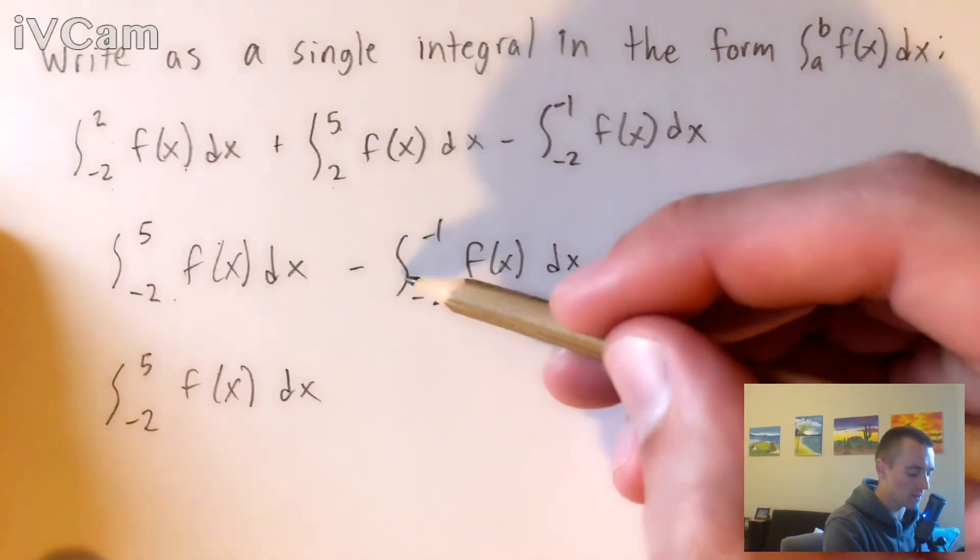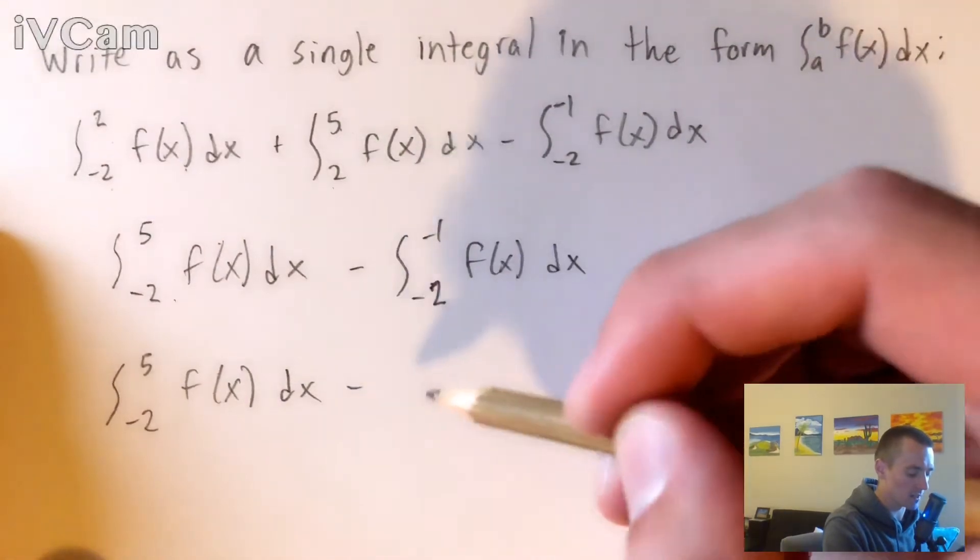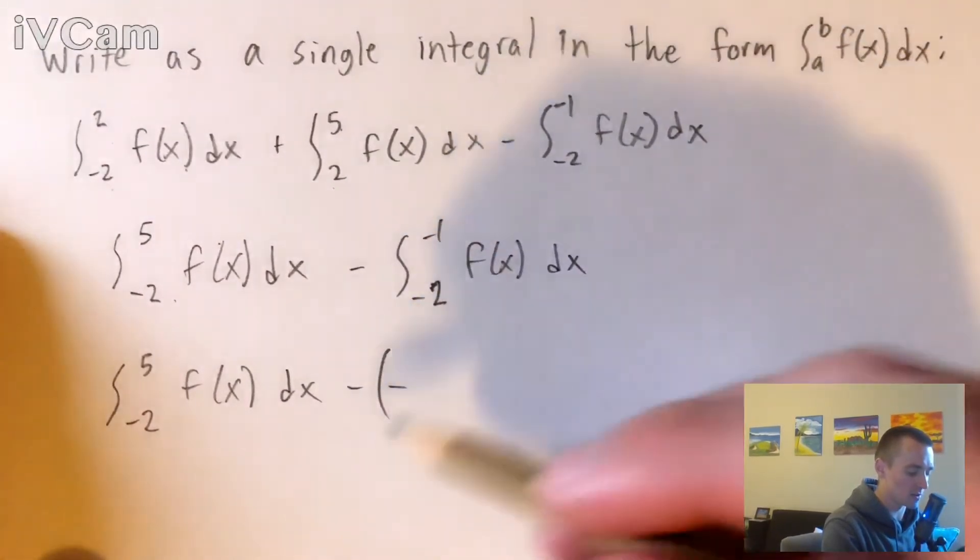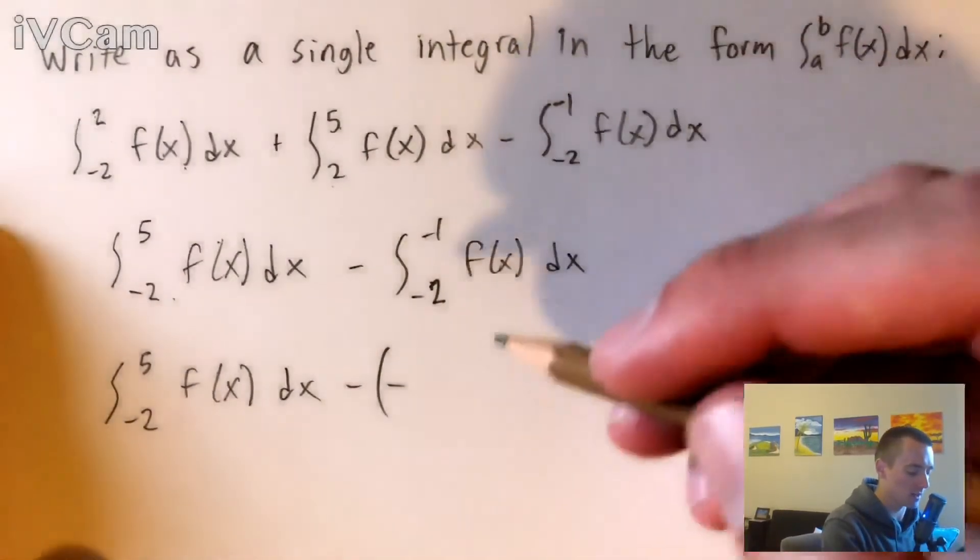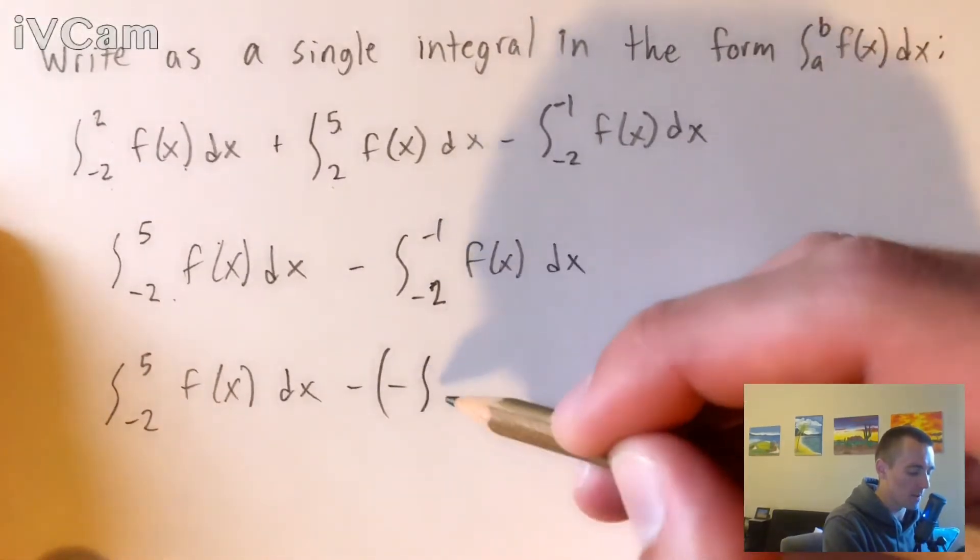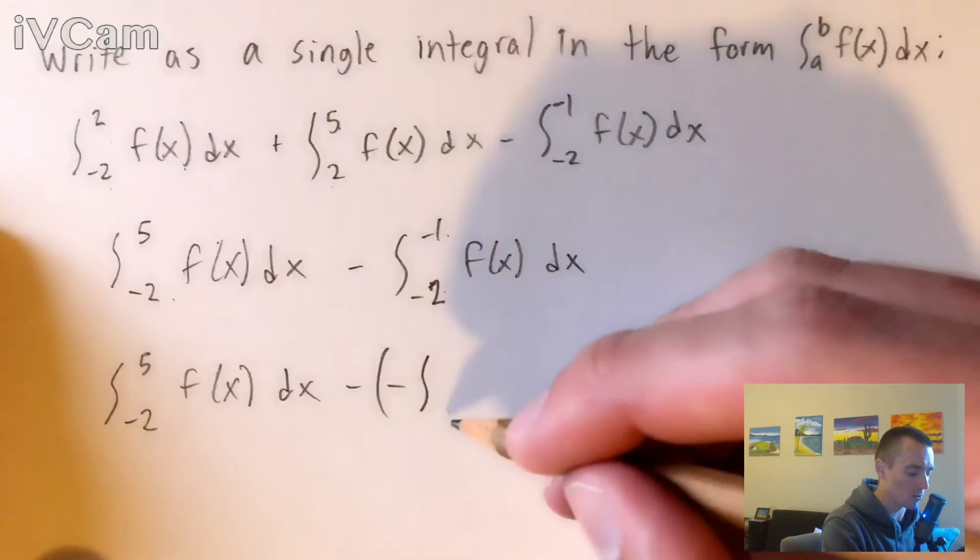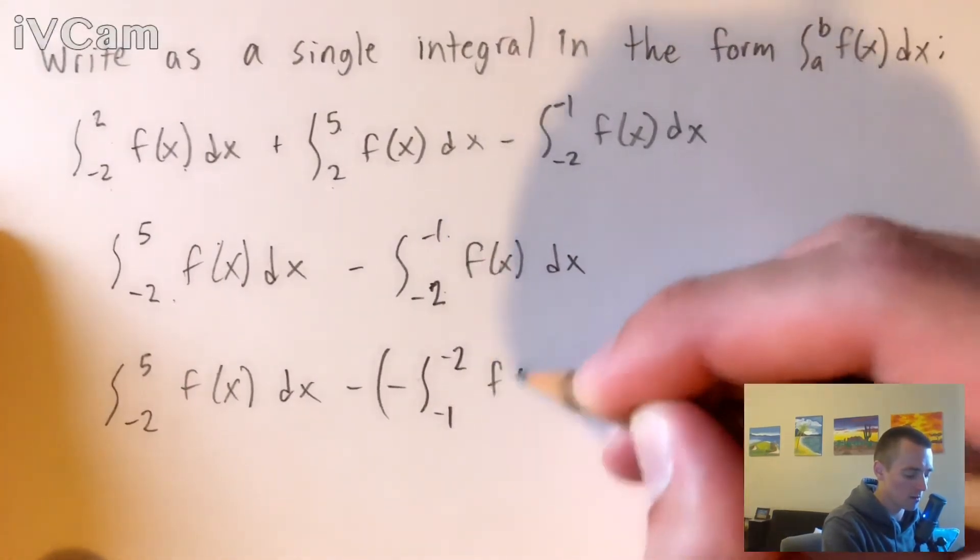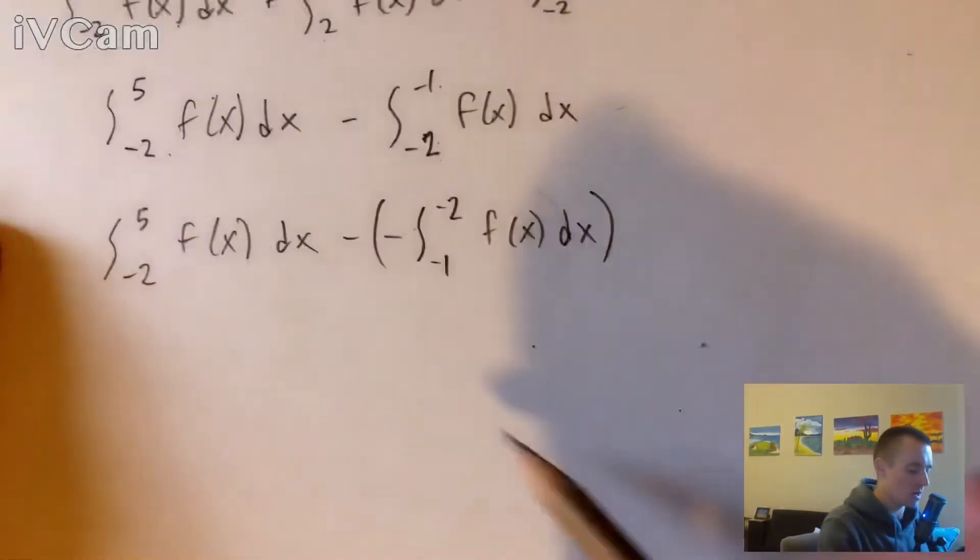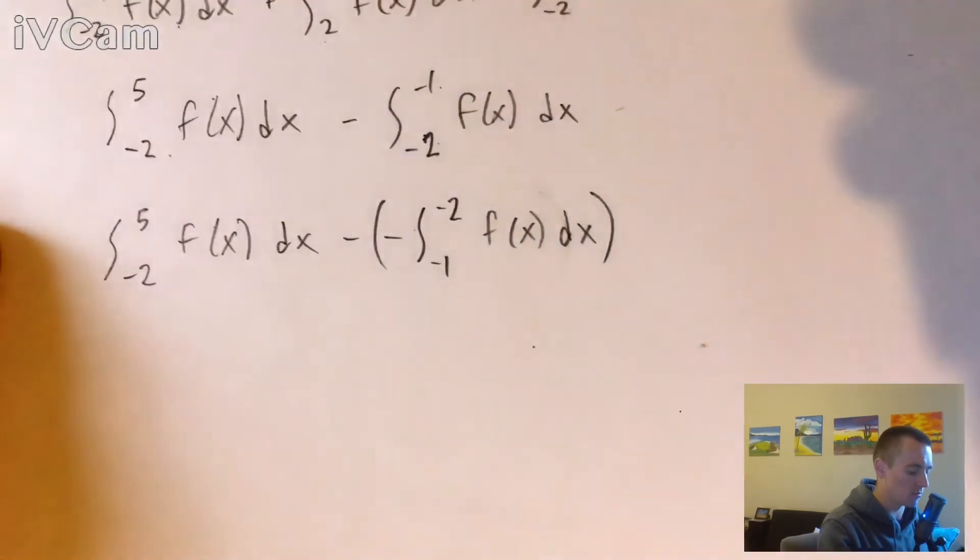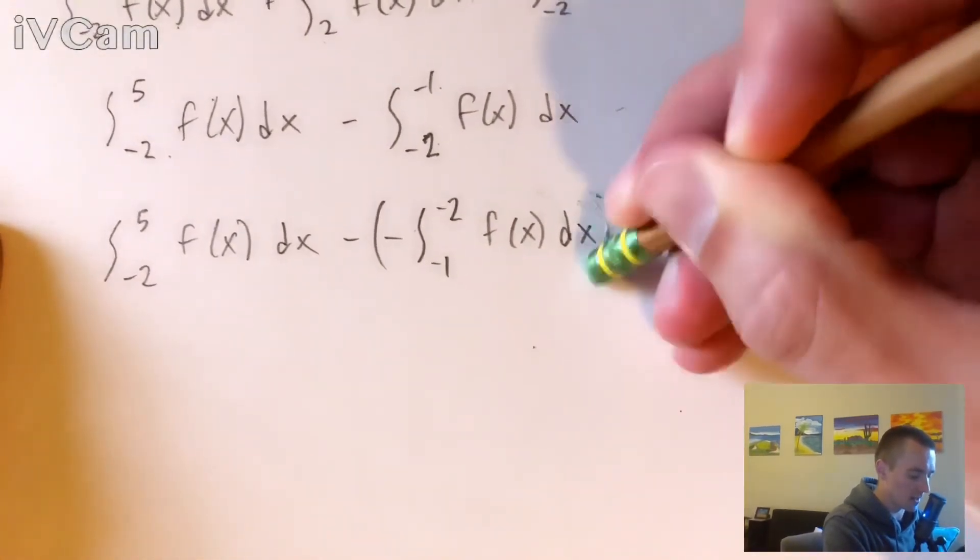But if we make this integral negative, which like I said, having a negative and a negative, those negatives are going to cancel out, we can flip the bounds on them. So the -2 will be the upper bound, the -1 will be the lower bound. And now, this negative negative will cancel out, so we can just make that into a positive.